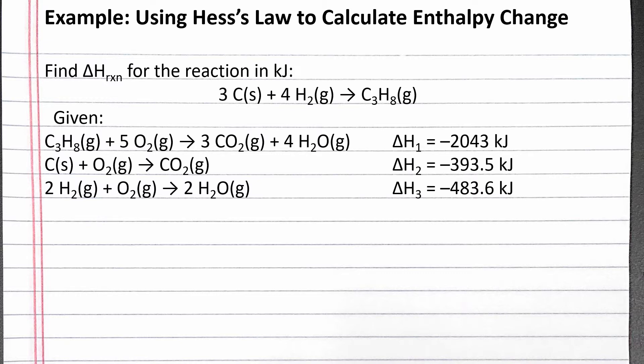According to Hess's law, if we can add together multiple reaction steps to get an overall reaction, then the enthalpy change for the overall reaction is the sum of the enthalpy changes for the reaction steps. To apply Hess's law, we must determine how we need to add together the three given reactions to get the overall reaction at the top.